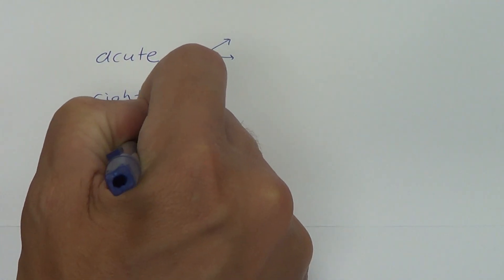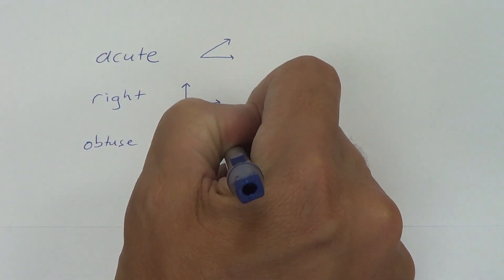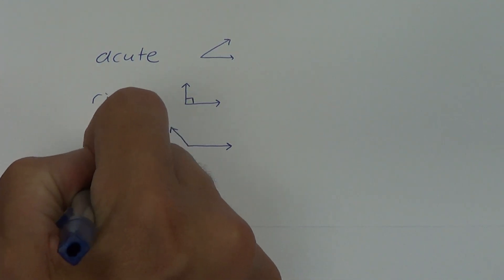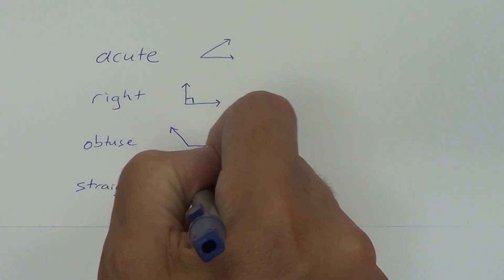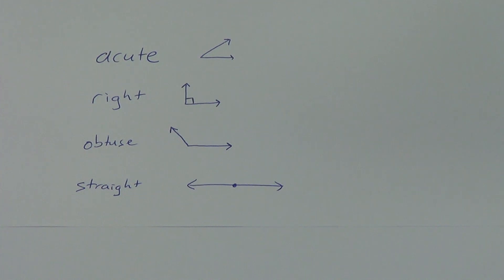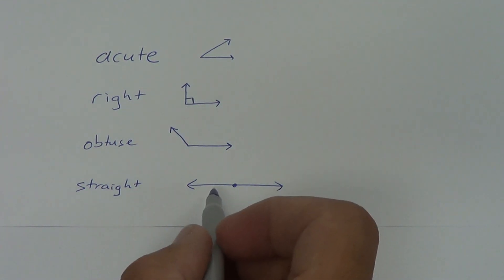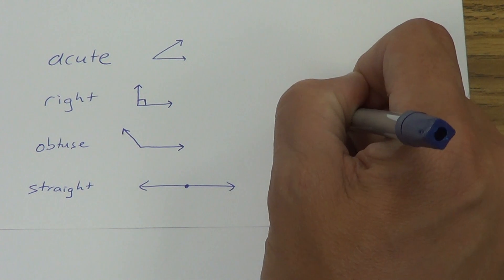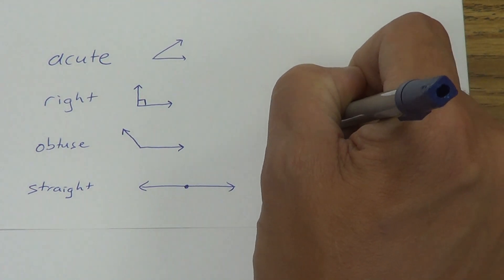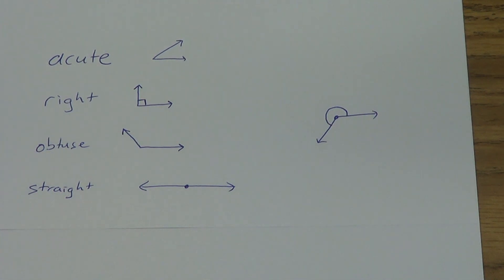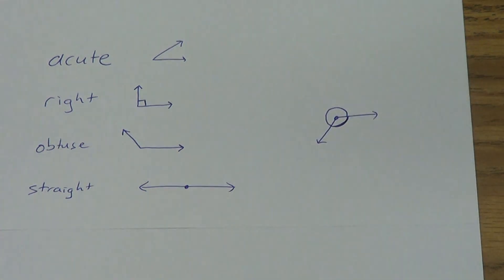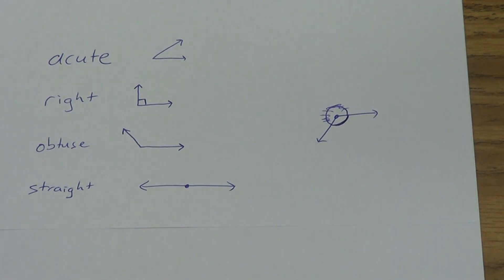We have obtuse angles — an angle whose measurement is more than 90 degrees. And then finally, we have a straight angle. A straight angle is formed by opposite rays, and this is exactly 180 degrees. In geometry class, we don't really talk about angles that are bigger than 180 degrees. So if we see something like this, we don't measure that outside part. We're always going to measure the smaller interior part, which is going to be less than 180 degrees.